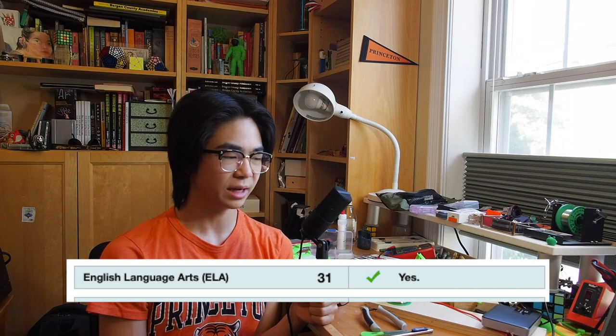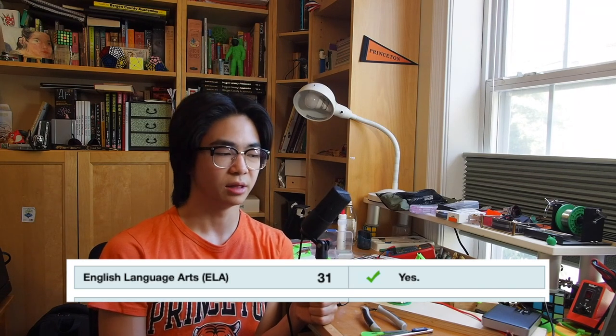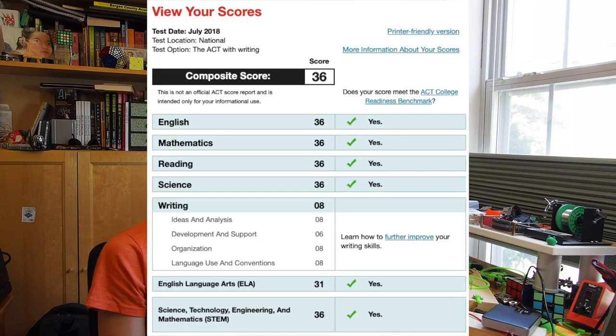This essay score lowered my overall ELA score down to a 31, even though I got a 36 on both reading and writing. I think it just goes to show that your essay score doesn't really matter that much, but you should still take the essay.